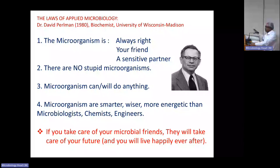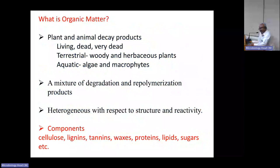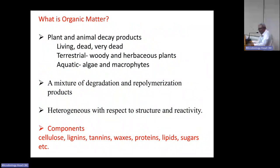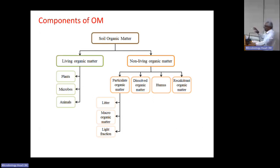Now I come to the actual part: what is organic matter? When addressing organic matter, the key questions are what is varying and what happens. Organic matter is in great abundance from animal decay products. It is a mixture of fresh and partially decomposed material, and is very heterogeneous with respect to structure and reactivity. Many components are present, such as cellulose, lignins, tannins, waxes, proteins, lipids, and so on. Because of this heterogeneity, the degree of decomposition may also vary. Physical, chemical, and biological factors define the decomposition rate.